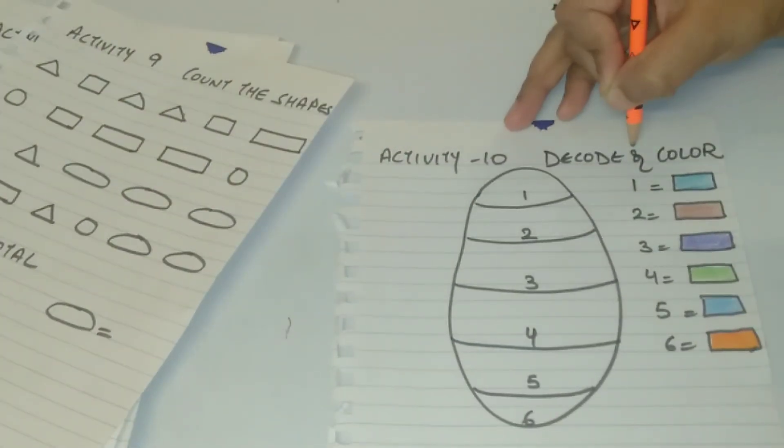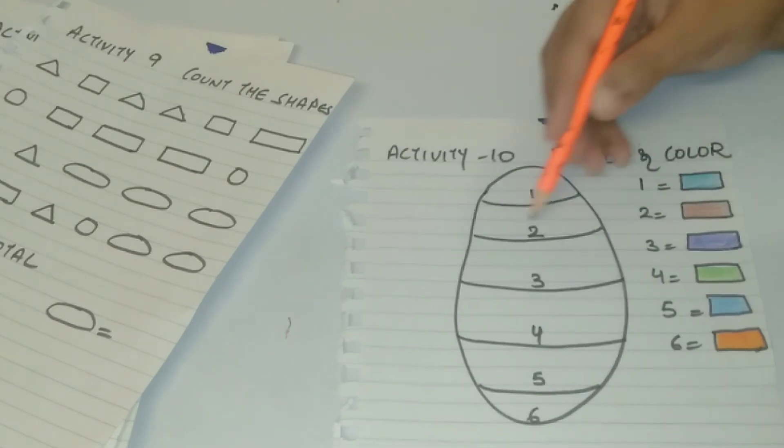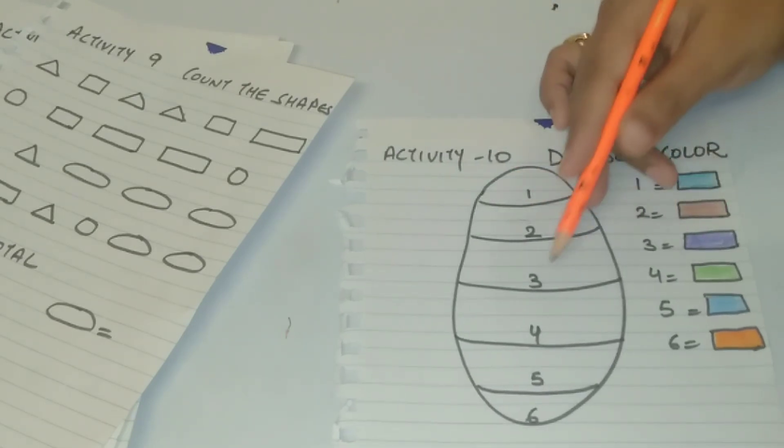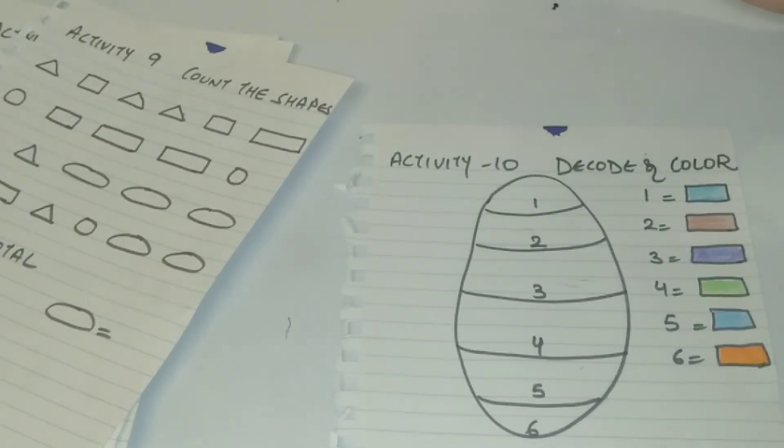The last activity is decode and color. Just draw an oval shape and put the numbers and put the colors like one is purple, two is brown and ask your kid to finish it up. Define the colors, they check the numbers, match the colors and it's good to go.